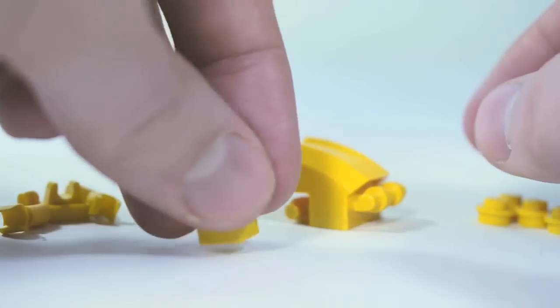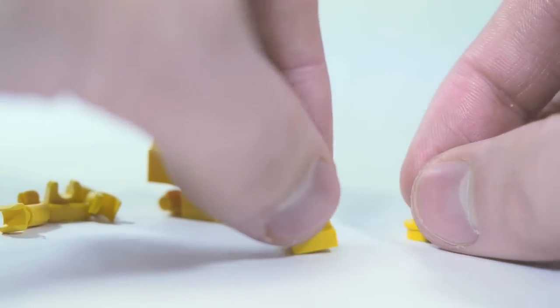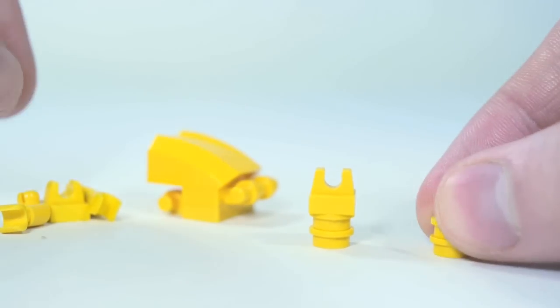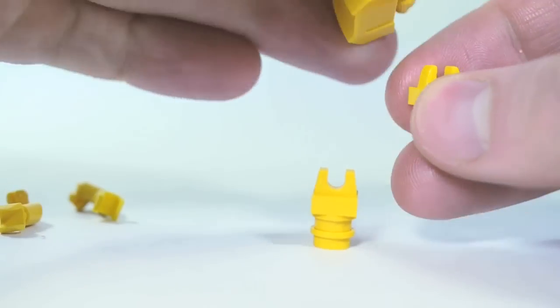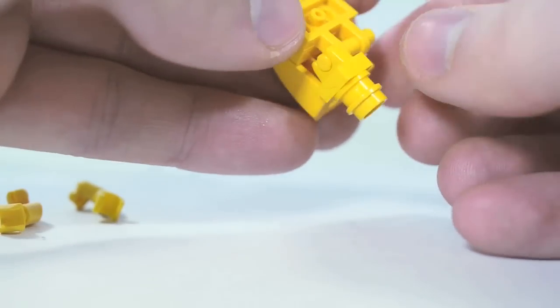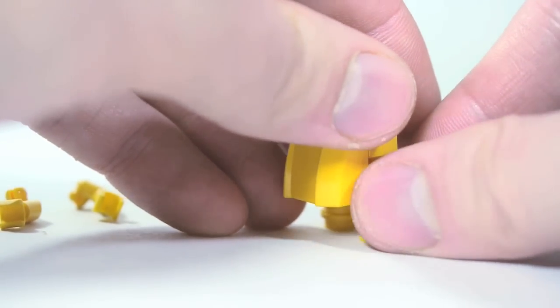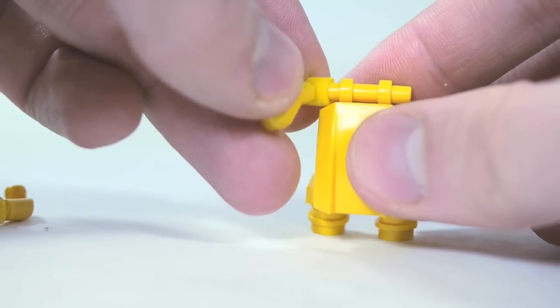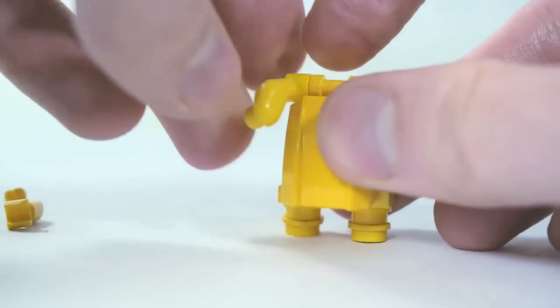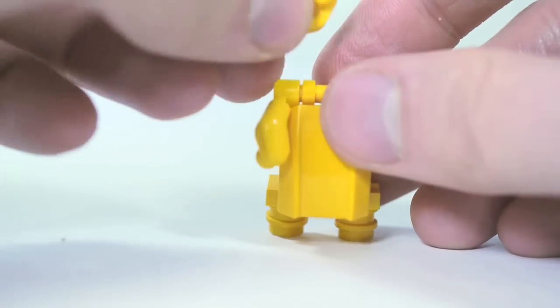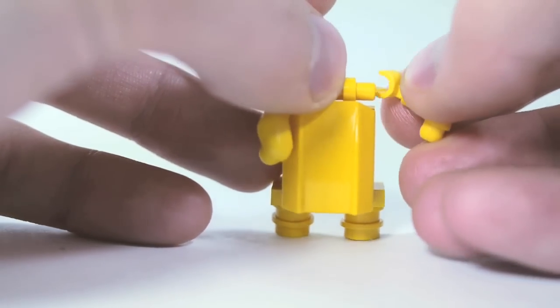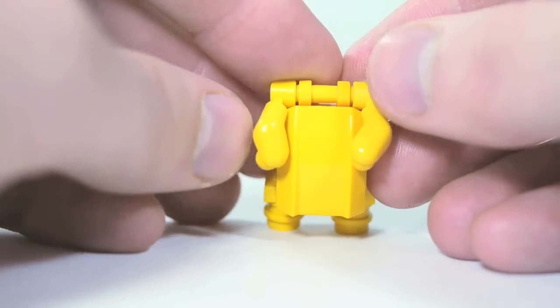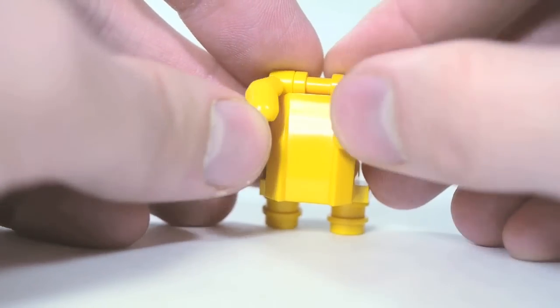And then, for the feet here, we're going to take a 1x1 plate with clip, two 1x1 rounds, another foot, clip those on at the bottom here. And for the arms, we're going to take minifigure arms in yellow, put the hand side on the top of the handle there, and then bend them down. And then there's sort of cute little fat little arms like Pikachu has. Hello! Hello!